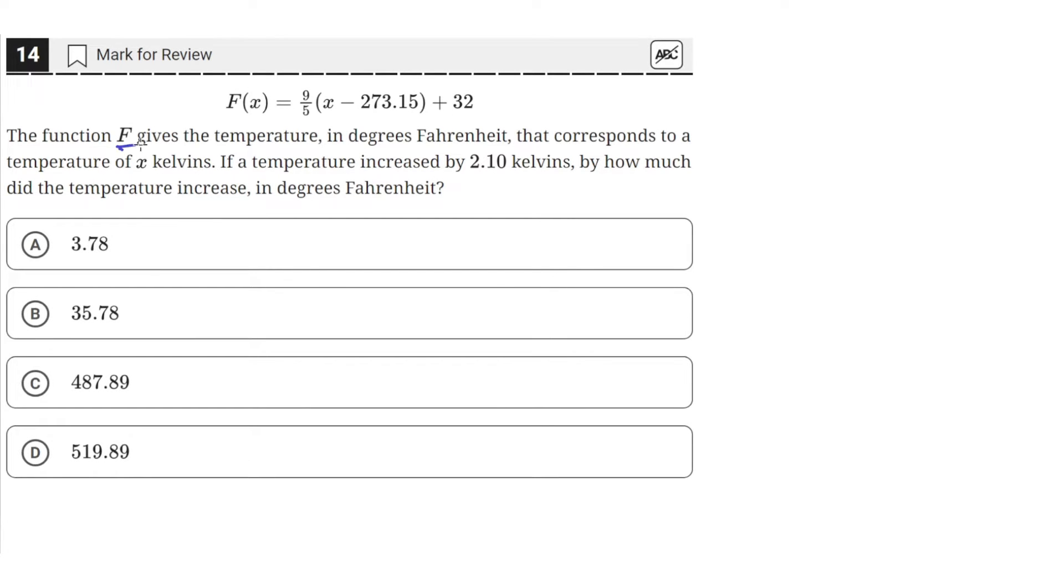The function F gives the temperature in degrees Fahrenheit that corresponds to a temperature of x kelvins. If a temperature increased by 2.1 kelvins, by how much did the temperature increase in degrees Fahrenheit?